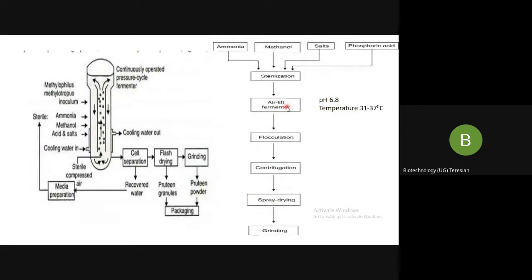Here I have a flow chart showing how the airlift fermenter is used for the production of single cell protein. You use ammonia, methanol, salts, and phosphoric acid as nutrients — ammonia for nitrogen, salts as carbon sources, phosphoric acid — all put together, sterilized, and placed into the airlift fermenter. Maintain the pH at 6.8 and temperature at 31 to 37 degrees centigrade. Any temperature fluctuation — as heat is generated — switch on your cooling jacket. After product formation, go for flocculation, centrifugation, spray drying, and grinding to get your single cell protein.